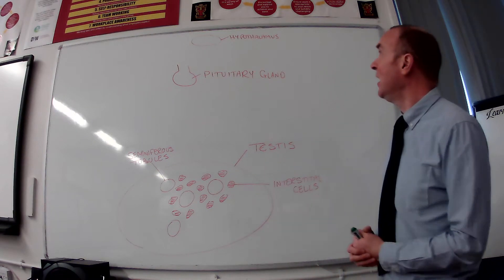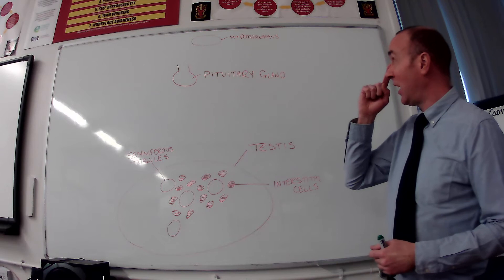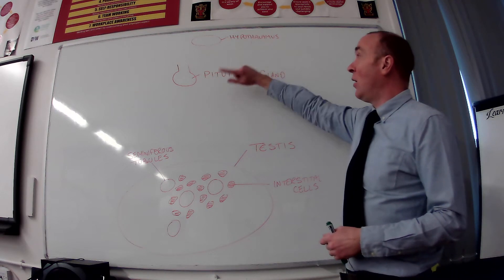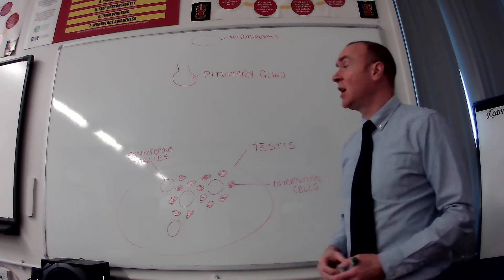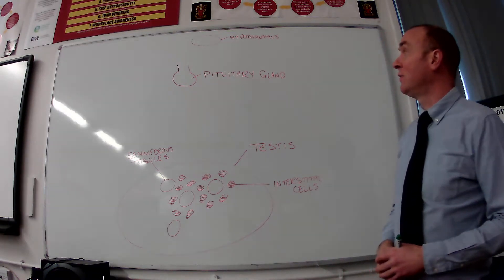So just to remind you, the story of sperm production starts in the brain with two structures, initially the hypothalamus and then the pituitary gland is involved as well.